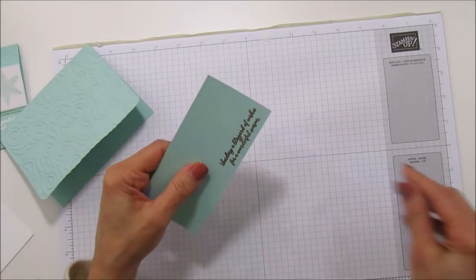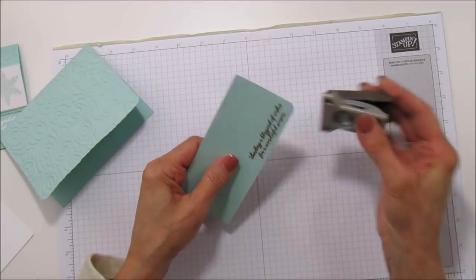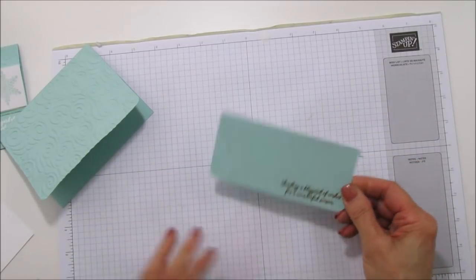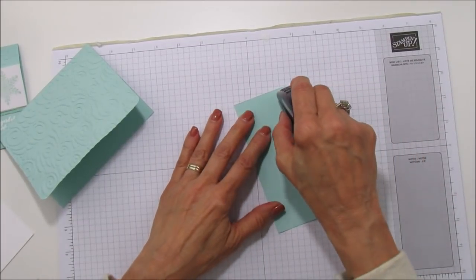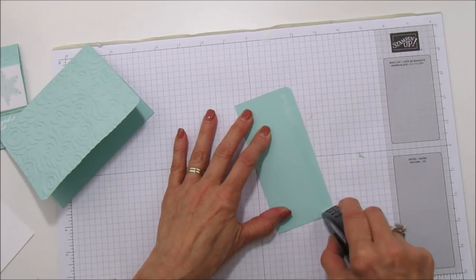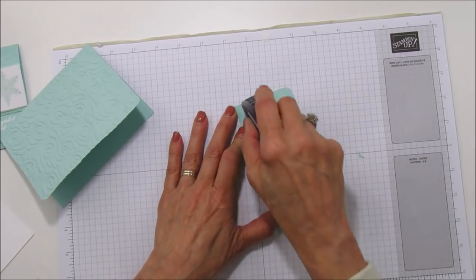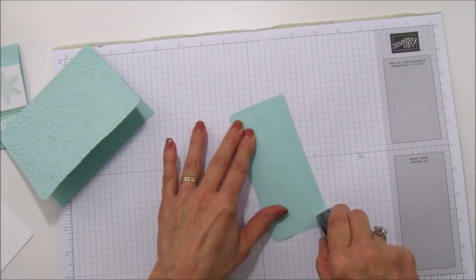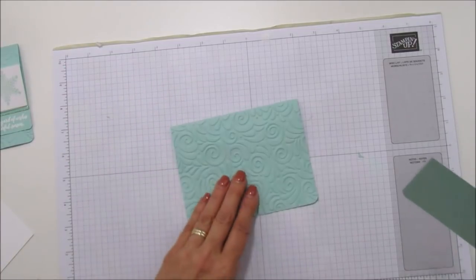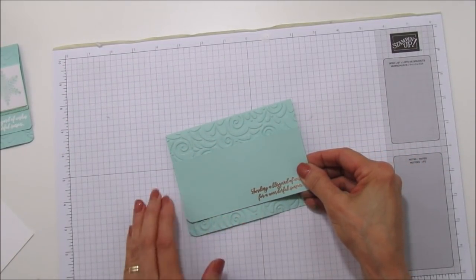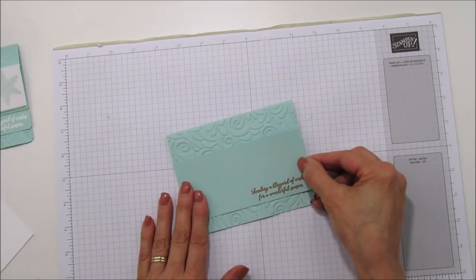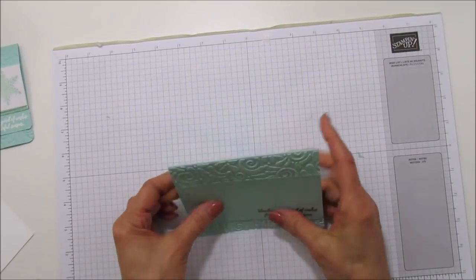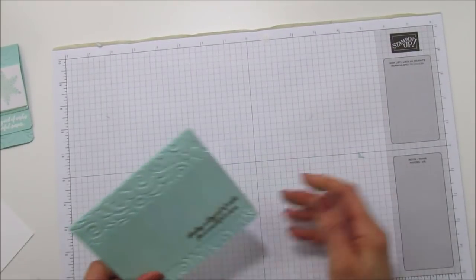We have that all embossed so I'm going to again take the corner rounder and round these corners. We're going to attach this and I always use stronger adhesive when you're adhering to an embossed card. It just holds it on so much better. Either use wet glue or something really strong. So we're going to line that up on there and then we're going to set it aside and we're going to stamp on our velvet.